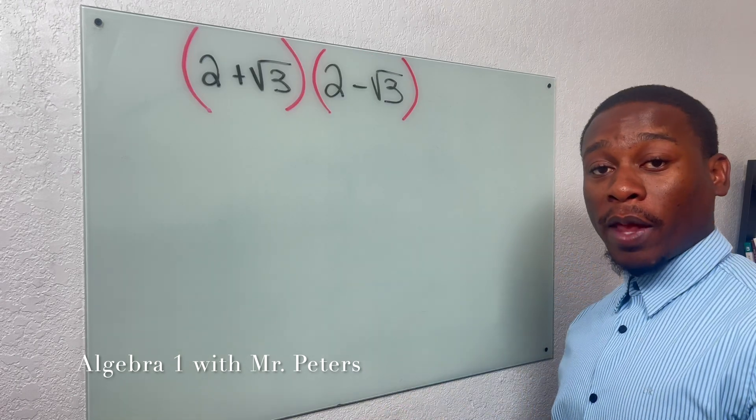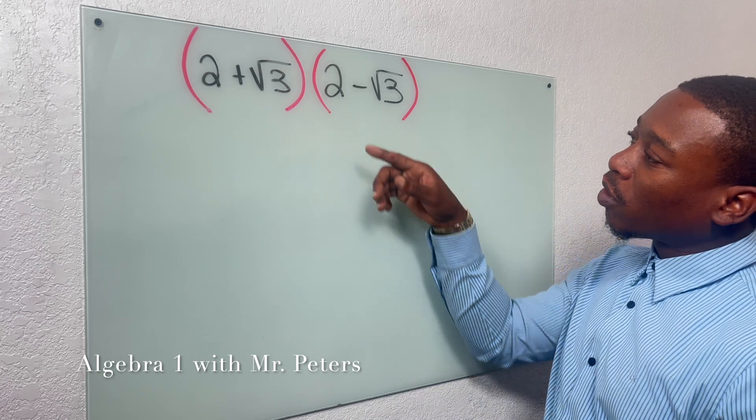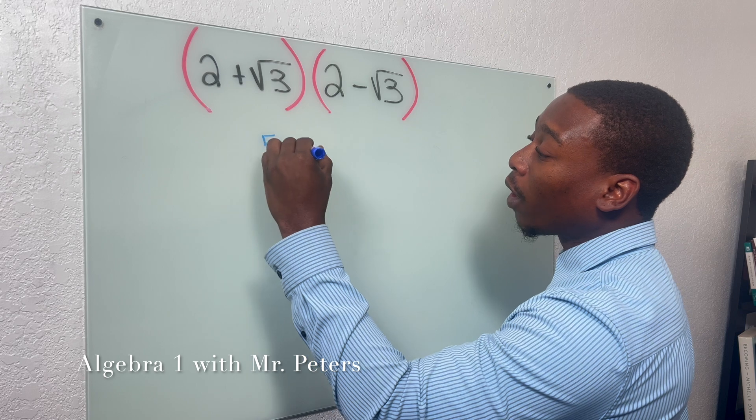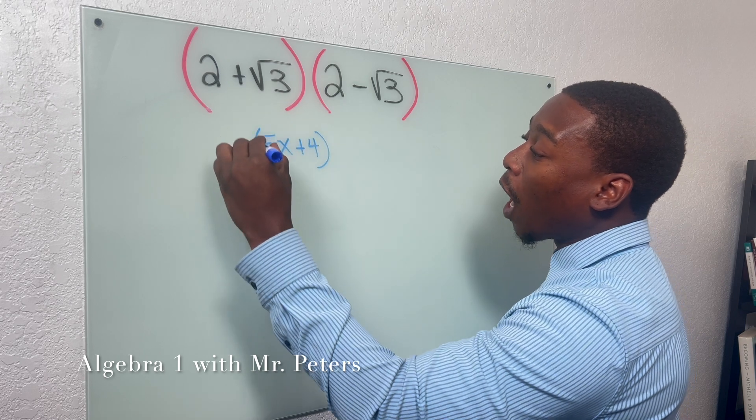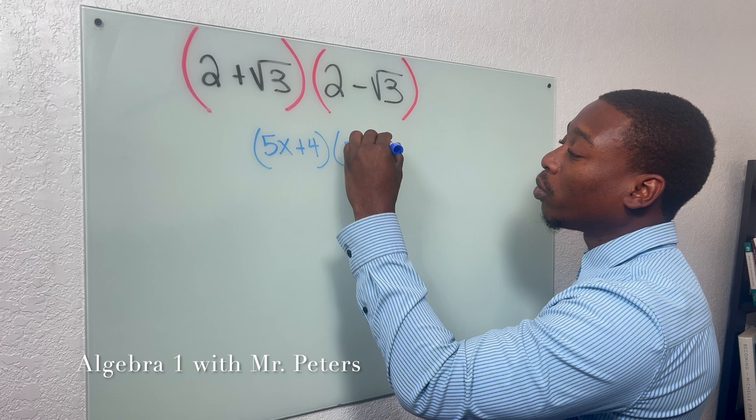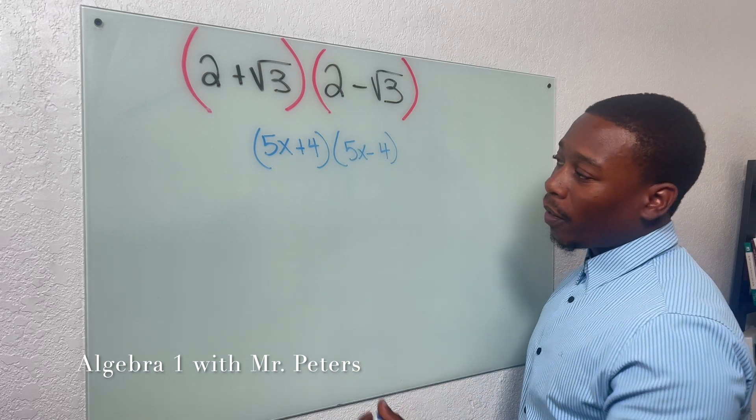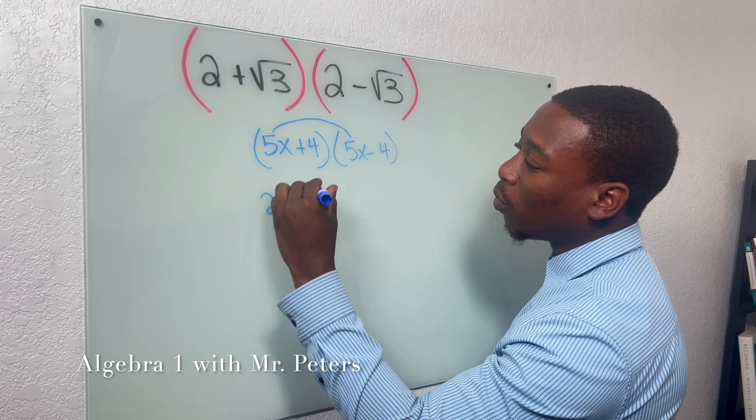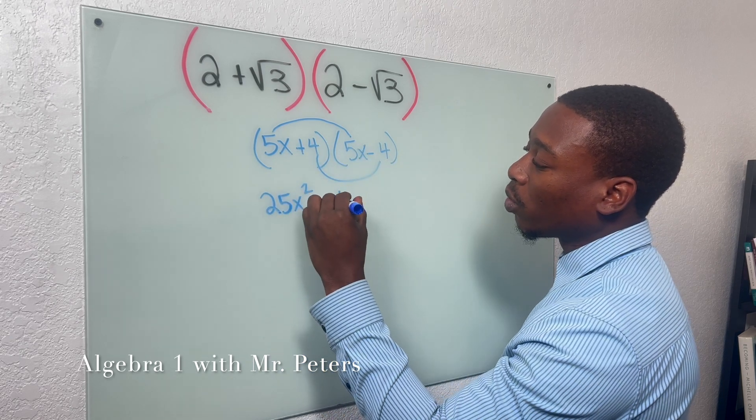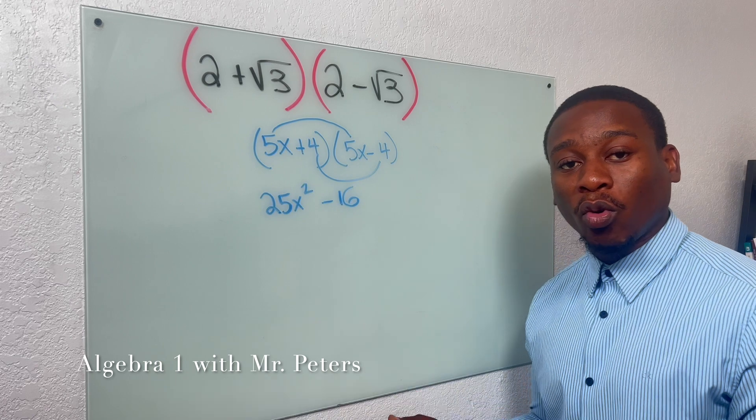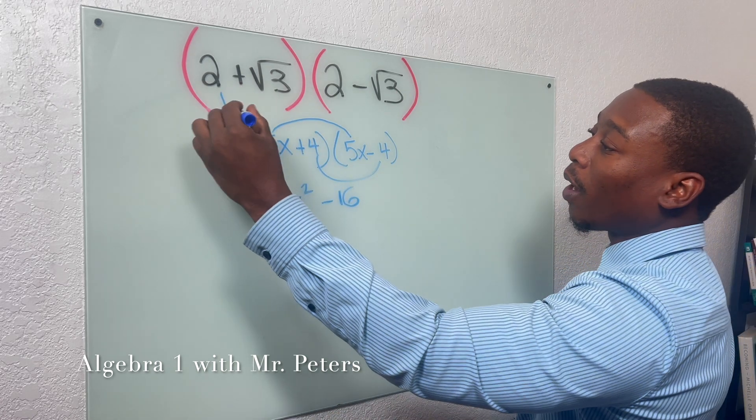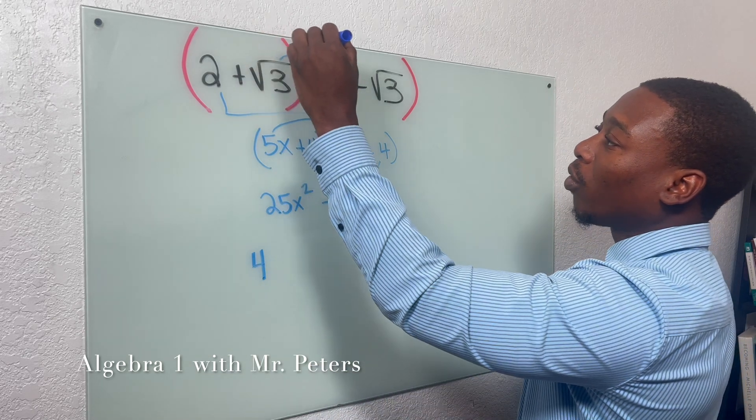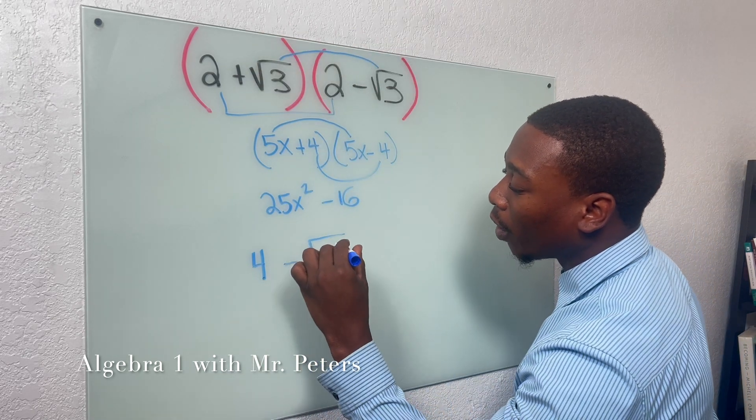In our next problem now, we're looking at the difference of squares and there's a key principle we have to remember. And that is when we multiply the difference of squares, our middle terms are going to cancel out. So what does that mean? That means we multiply first two terms, right? And we're going to multiply the last two terms. So the same rule is going to apply here.